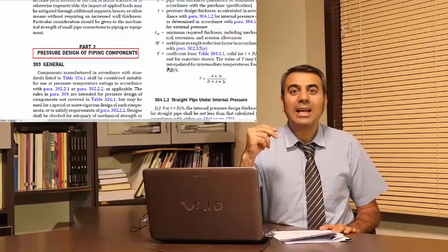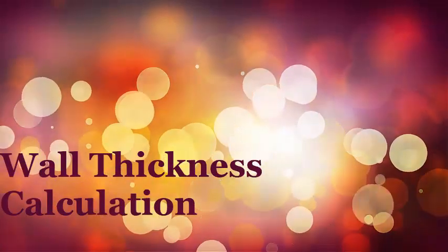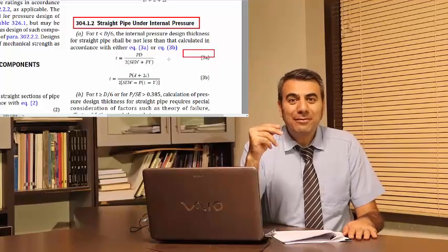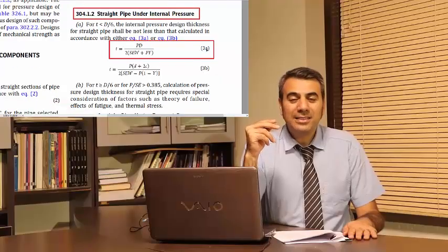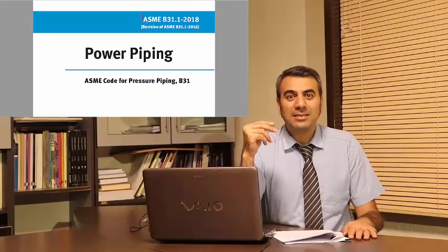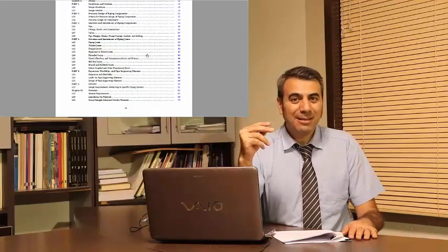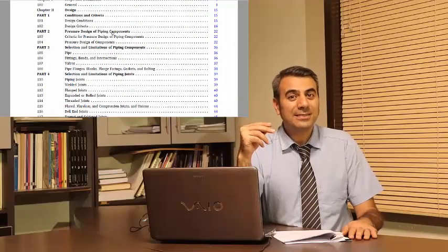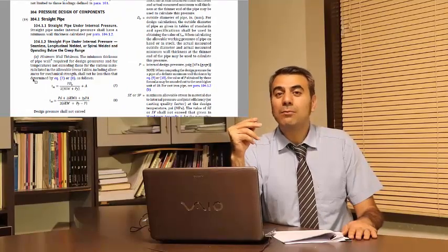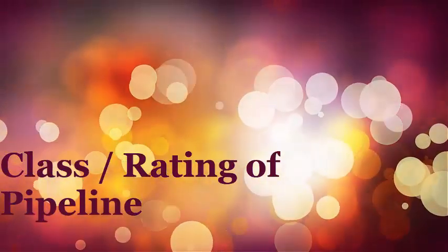This course covers wall thickness calculation of a straight pipe step by step, based on ASME B31.1, B31.8, and B31.4. Through this comparison it will be revealed how different safety factors used by different codes make one of them safer and more reliable than another.